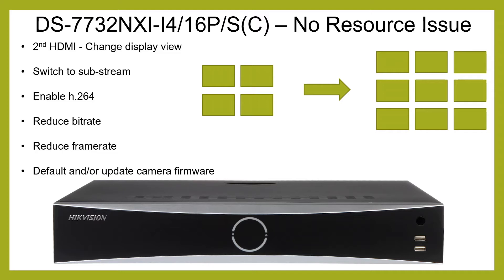If you're here because you've got a 'no resource' issue and this is not your issue with the second HDMI, let me go through the list of what to do to get rid of it. First thing to do is make sure on your live view you've selected substream on all the cameras — you get a little display box at the bottom of the camera, click on substream. If you still get the 'no resource' issue then follow this in order.